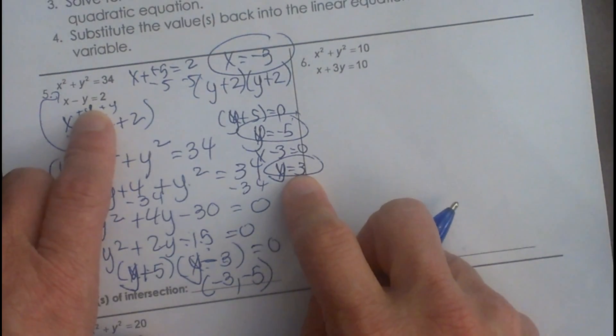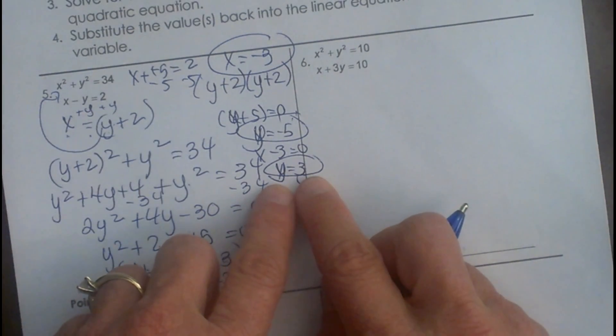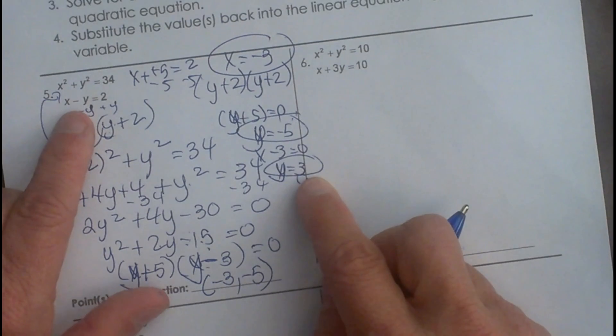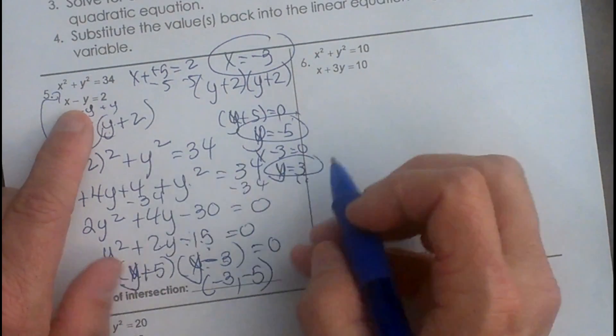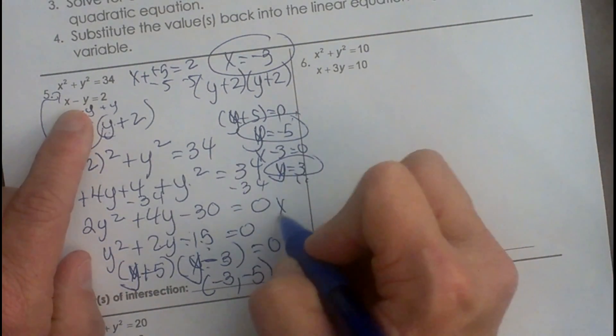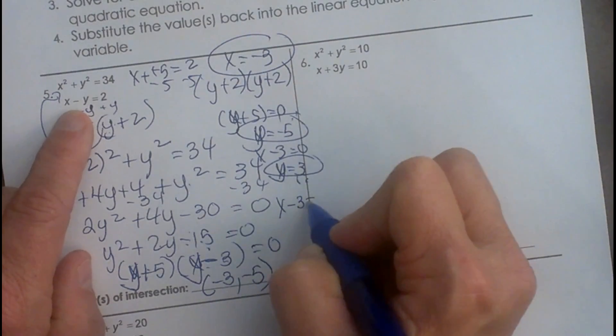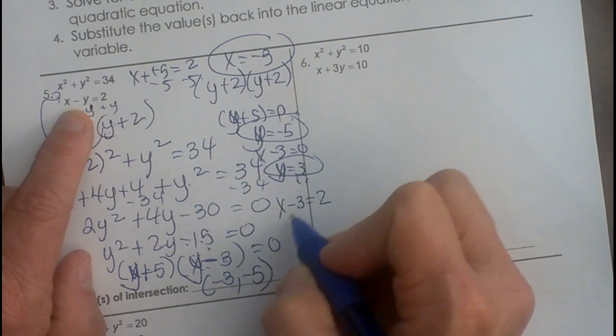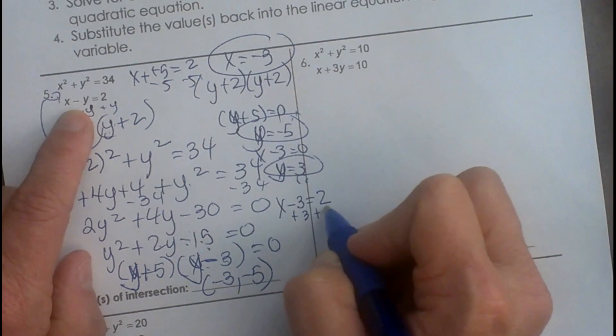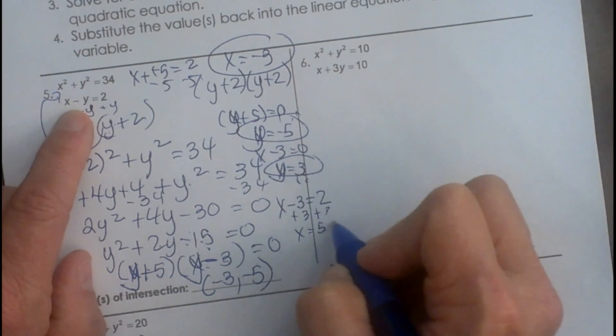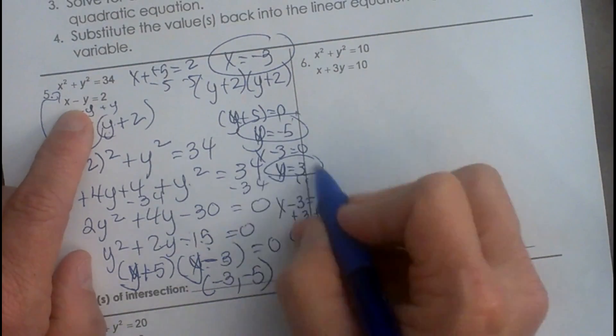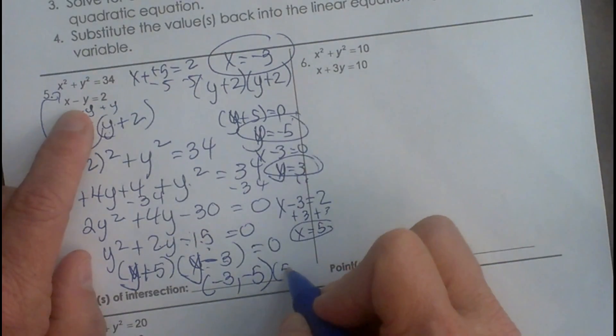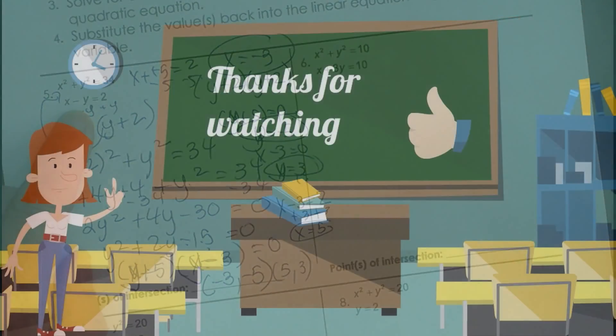Now let's solve for the X coordinate when Y is 3. So X minus 3 equals 2, add 3, X is 5. So the X value is 5 when the Y value is 3, so it's 5, 3. And there you go.